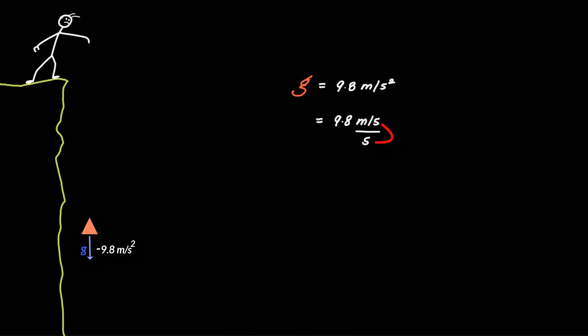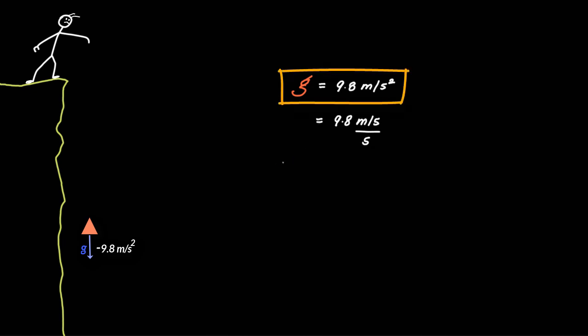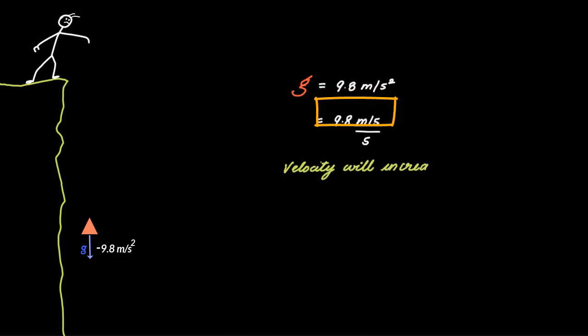If you take this per second up, you get 9.8 meters per second squared back, which is a more familiar way of writing the value of g. When you write g this way, it gives you a sense of how gravity changes the velocity and position of an object. It simply means that an object subjected to an acceleration of 9.8 meters per second squared will have its velocity increasing by 9.8 meters per second every second.